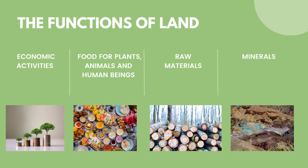Land also provides raw materials — resources that are used to produce or manufacture other products. Land also provides minerals. These different minerals serve different purposes and can be classified into different categories: minerals of monetary value such as diamonds, silver, and gold; minerals used as raw materials in industries such as coal, copper, iron, and platinum; and minerals used as nutrients by plants and animals such as zinc, phosphorus, and calcium.